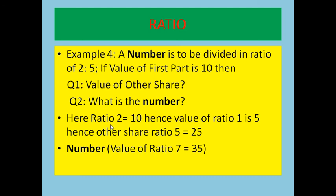To recap: ratio 2 is 10, so value of ratio 1 is 5. The other part is 25. The number is the addition of 10 and 25, which is 35. Or, ratio total is 7, multiplied by the value of ratio 1 which is 5, giving 35. By all methods you get the same answer — focus on the value of ratio 1.